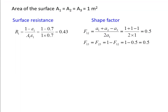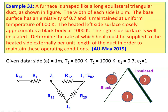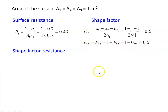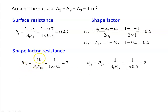The shape factor for a triangular surface F12 equals (A1 plus A2 minus A3) divided by 2A1. Using this equation, F12 equals 0.5. And F13 equals F23 equals 1 minus F12, which also equals 0.5. So the shape factor between surfaces 1 and 2, 1 and 3, and 2 and 3 are all 0.5. The shape factor resistance R12 equals 1 divided by (A1 times F12) equals 1 divided by (1 times 0.5) equals 2. Similarly, R23 equals 1 divided by (A1 times F13) equals 2.